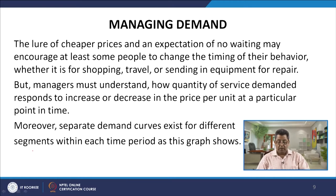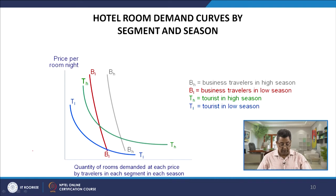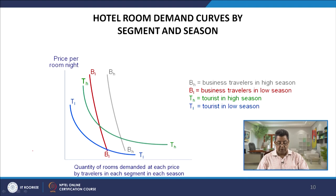Moreover, separate demand curves exist for different segments within each time period. This graph shows hotel room demand curves by segment and season, using two variables: segments and season. On the x-axis is the quantity of rooms demanded at each price by travelers in each segment in each season, and on the y-axis is the price per room night.